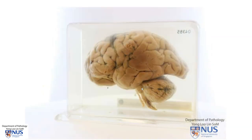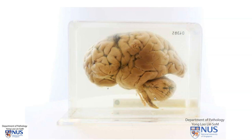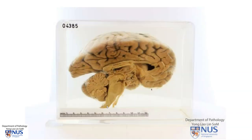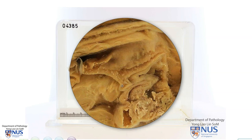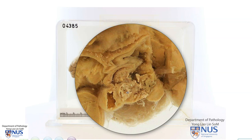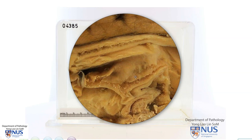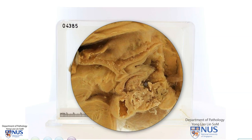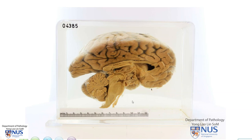Let me just show you the outer surface of the cerebral hemisphere and cerebellum and brainstem. The main pathology is located in this region, and what we can see over here is a cystic lesion with several cyst locules or cyst compartments, and lining the cyst locules is this yellowish friable appearing material. This is compressing on the optic chiasm just superior to it, and also potentially compressing on the third ventricle. This cystic lesion is located in the suprasellar region and the diagnosis here is a craniopharyngioma.